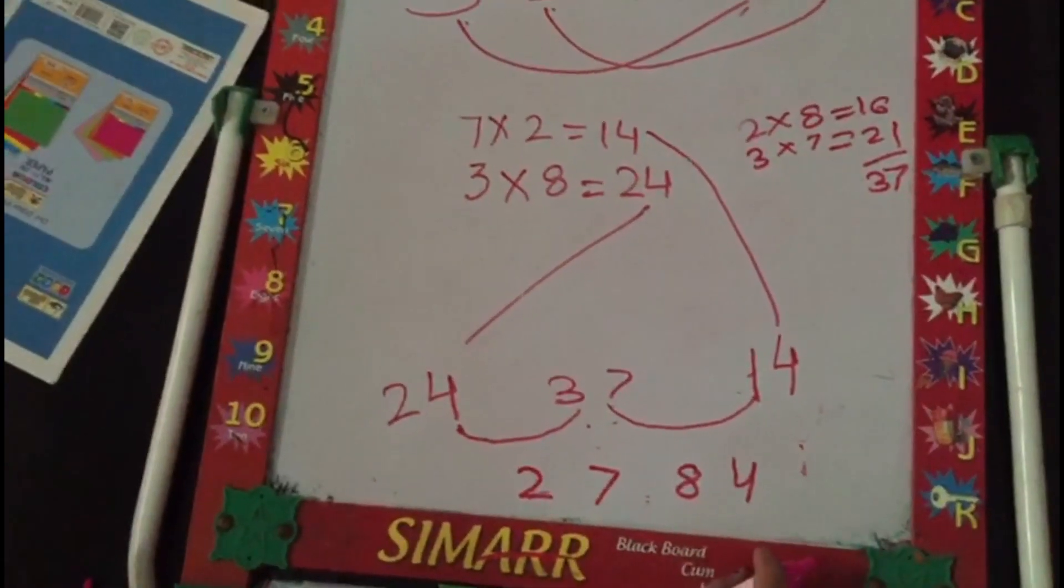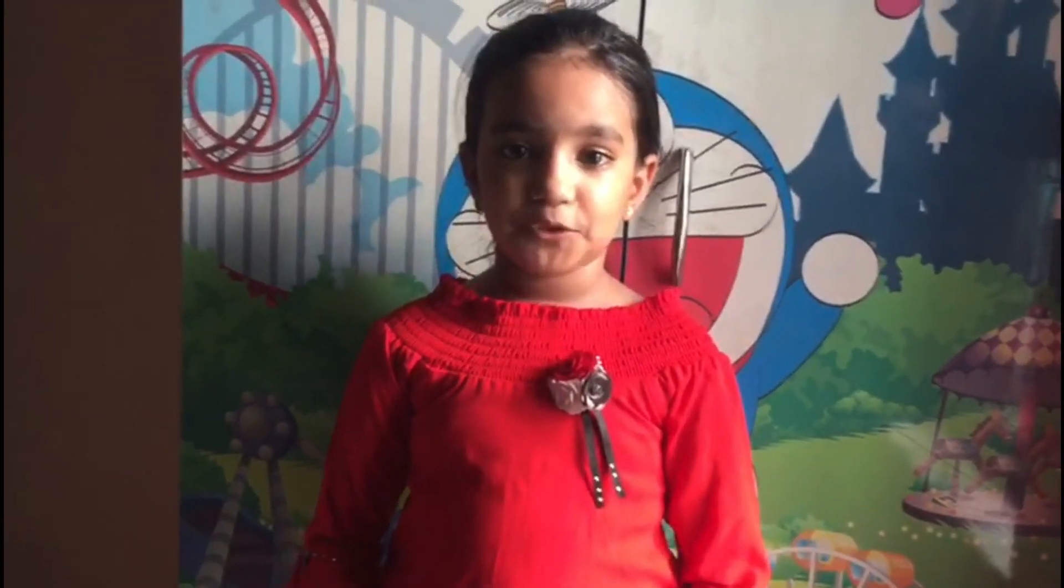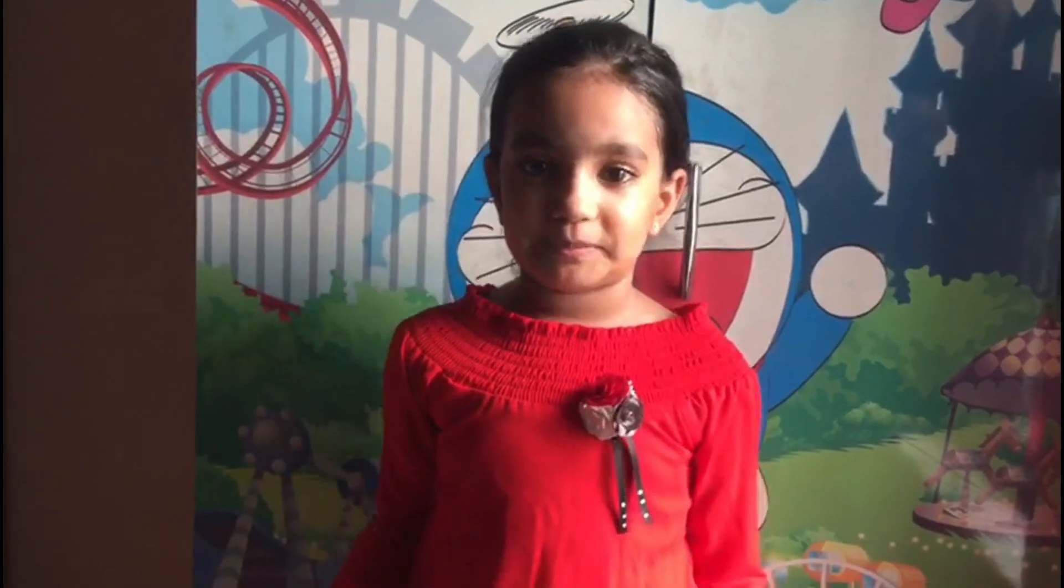So we have 2784 as the answer. In my next video I will be covering 3 digit multiplication.